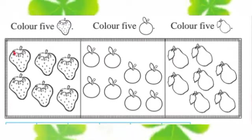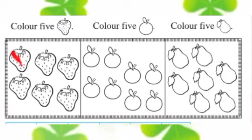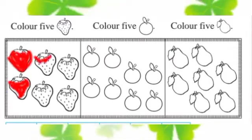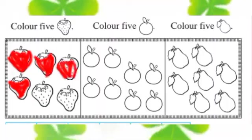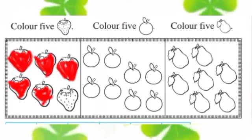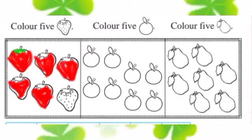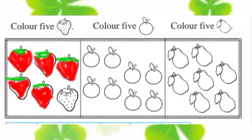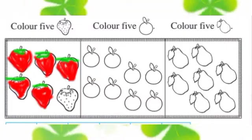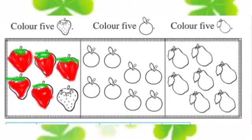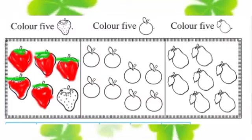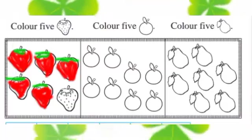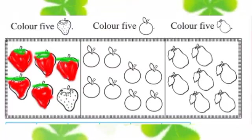1 and 1 make 2, 2 and 1 make 3, 3 and 1 make 4, 4 and 1 make 5. या पद्धतिने आपल्याला 5 strawberries ला रंग द्यायचा आहे.